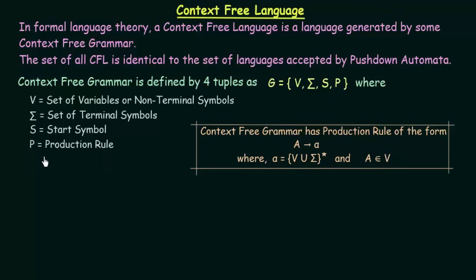The difference between regular grammar and context free grammar lies in the production rule. In context free grammar the production rule has the form A → α, where α is in (V ∪ Σ)*, meaning α can be a non-terminal symbol, a terminal symbol, or even empty (epsilon), since it is a closure. Here A belongs to V, meaning A belongs to the set of non-terminal symbols. This is how we formally define a context free grammar.